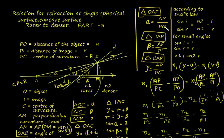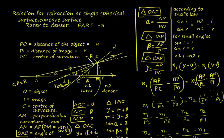AP is common. PO is the distance of the object. By the new Cartesian convention, measurement is in the direction opposite to the incident light, therefore the distance of the object is negative U. Similarly, PI is the distance of the image, which is negative V. And PC, the center of curvature, equals negative R. All these quantities are negative because all measurements are in the direction opposite to the incident light.